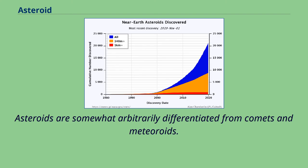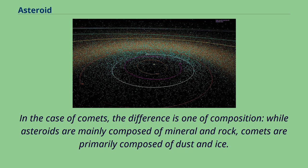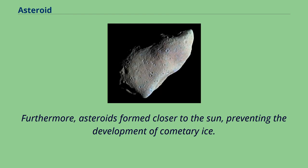Asteroids are somewhat arbitrarily differentiated from comets and meteoroids. In the case of comets, the difference is one of composition: while asteroids are mainly composed of mineral and rock, comets are primarily composed of dust and ice. Furthermore, asteroids formed closer to the sun, preventing the development of cometary ice.